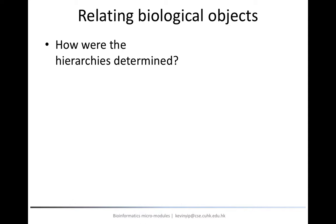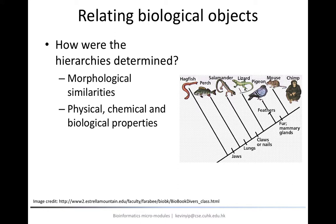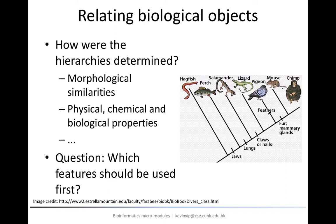For example, species that are evolutionarily close to each other usually share some morphological properties. For instance, we can classify animals by asking whether they have jaws or not. Then among those animals with jaws, we can classify them by having lungs or not, and so on. Other than morphological properties, we may also use other observable features such as chemical properties of bacteria. The question is: which feature should be used first? How do we know that animals were separated by having jaws or not earlier than having lungs or not?